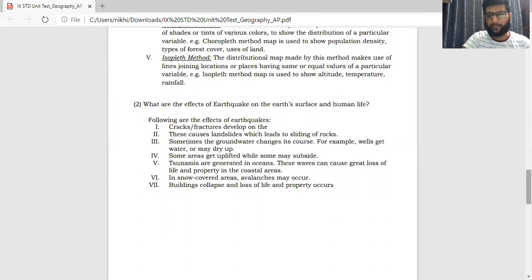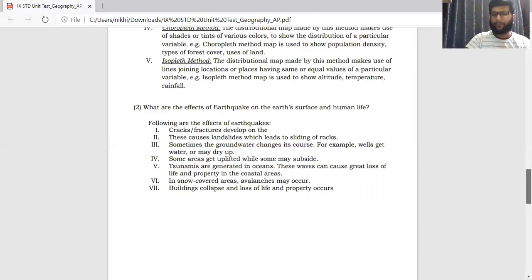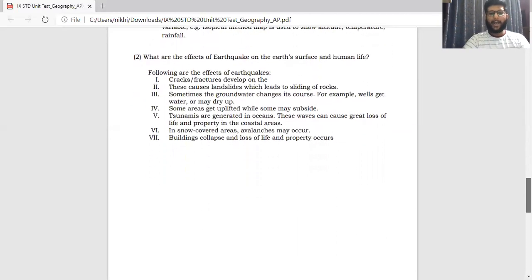Tsunamis are generated in oceans. These waves can cause a great loss of life and property in the coastal areas. And when I say these waves can cause a great loss of life and property, I am pretty much sure when India had experienced that. And we all know the fact that the massive destruction that is being brought about by the tsunamis. In snow-covered areas, avalanches are taking place. They are similar to landslides but they take place in snow conditions. Building collapses, loss of life and property also occurs. So again, it's a very simple answer children. Please do go ahead and score full marks on these topics. Remember your chapters are very simple. The initial chapters are quite scoring so you can capitalize on them.